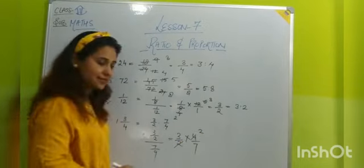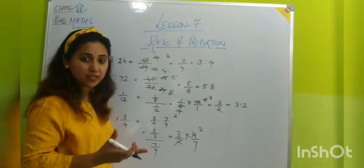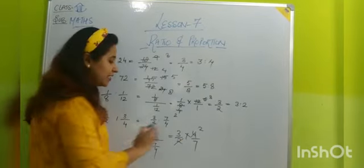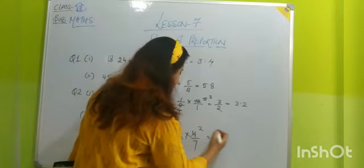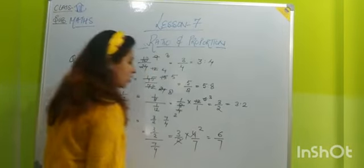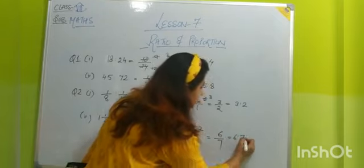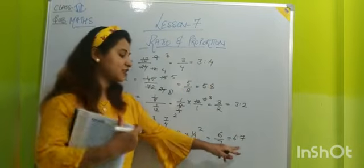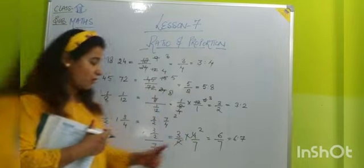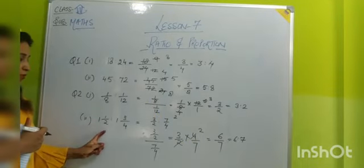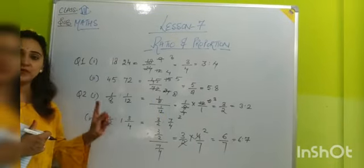Now 2 times 2 is 4, cancel. 3 and 7 are not common, they remain as is. Now multiply: 3 times 2 is 6 and 7. So you can write 6 upon 7 as 6 ratio 7. Means 6 ratio 7 is the simplest form of 1 and 1 upon 2 ratio 1 and 3 upon 4.